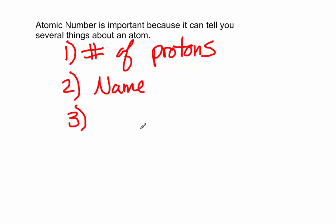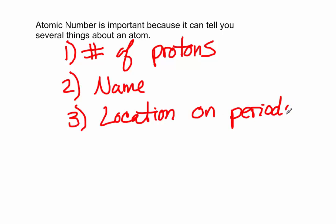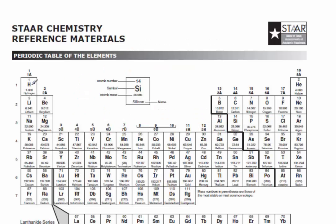Number 3, it will tell you the location on the periodic table. You'll notice the way the periodic table is laid out, you have 1, 2, 3, 4, 5, 6, 7, 8, 9, 10, 11, 12, 13, and it keeps going up. The periodic table is laid out from left to right, top to bottom, in order by the atomic number — in order by the number of protons that it has.